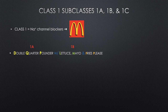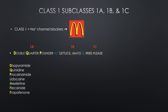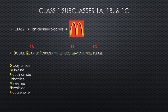The green letters are your class 1B, and the orange letters are your class 1C. Subclass 1A has the medications disopyramide, quinidine, and procainamide. Subclass 1B has lidocaine and mexiletine. And finally, subclass 1C has flecainide and propafenone.